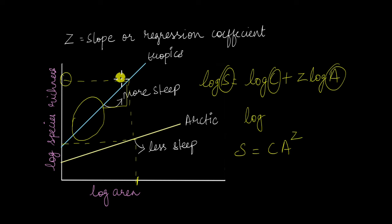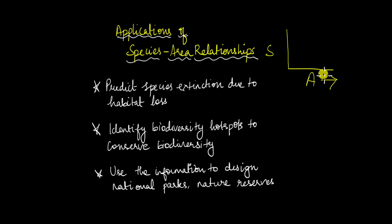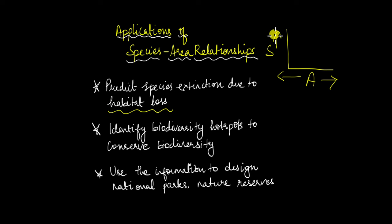Why does the species-area relationship matter? One practical application is predicting whether a species will become extinct due to habitat loss. The graph shows species richness increasing with area, but we can reverse this: if area decreases due to habitat loss — from deforestation or landfill expansion — species richness will also decrease. Using the species-area relationship, we can predict which species would become extinct or endangered as habitat shrinks due to human activities.